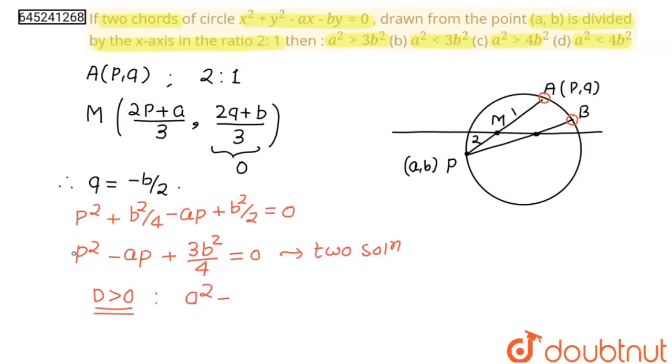So discriminant = a² - 4 × 1 × (3b²/4) > 0. The 4 will cancel out and we get a² > 3b². This is our answer, so our first option is correct. Thank you students.